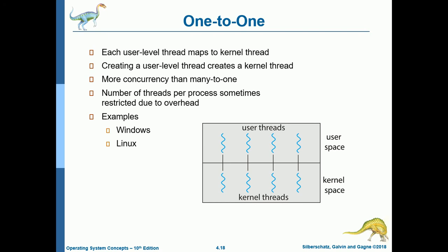The one-to-one model maps each user-level thread to a kernel thread. Creating a user-level thread creates a corresponding kernel thread. This allows more concurrency than many-to-one, though the number of threads per process is sometimes restricted due to overhead. Systems using one-to-one include Windows and Linux.